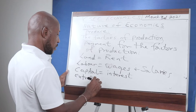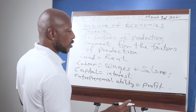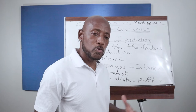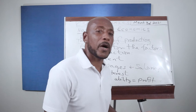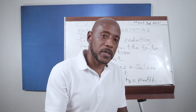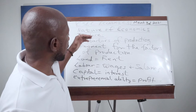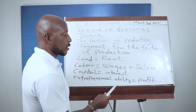For entrepreneurial ability, the payment is referred to as profit. When you use your skills and expertise to put together all the other factors of production, manage them, and run a business successfully, you earn a profit. Profit is basically the money you have left after taking care of all your expenses — your revenue minus your cost. So those are the four payments for the factors of production: for land it's rent, for labor it's wages and salaries, for capital it's interest, and for entrepreneurial ability it's profit.